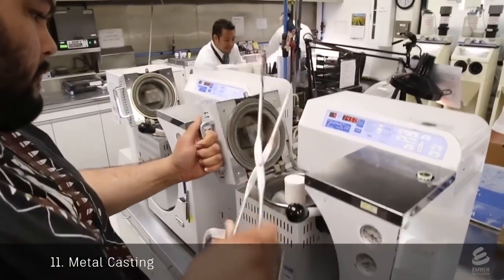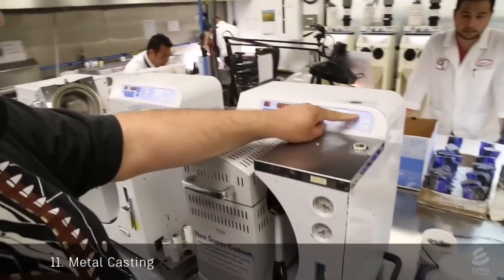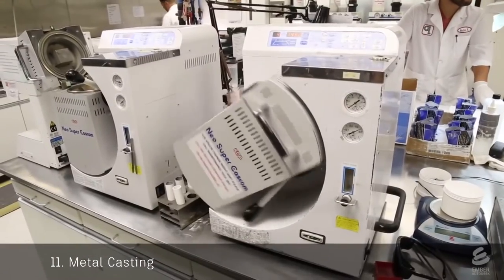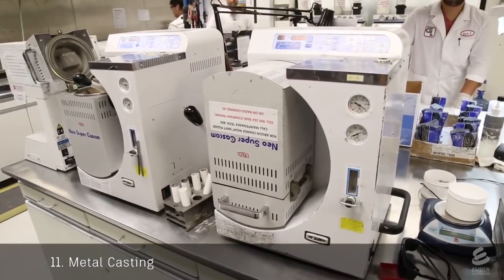Directly from the oven, the investment is inserted into a vacuum casting machine. Already inside is a precious metal alloy. The machine flips over and a vacuum pulls the molten metal into the void space.